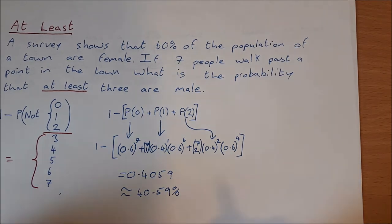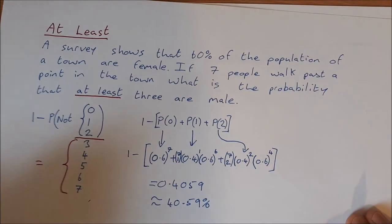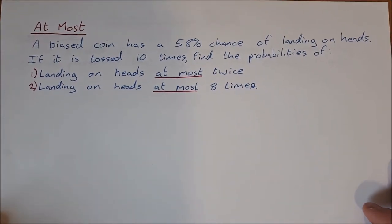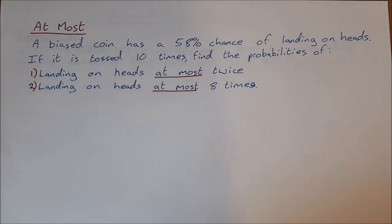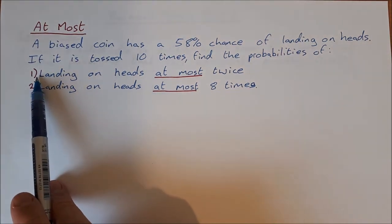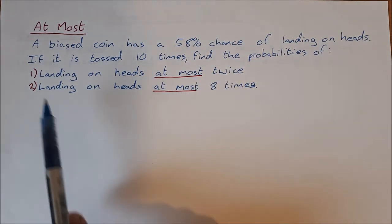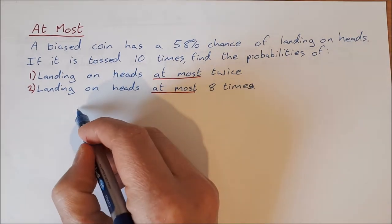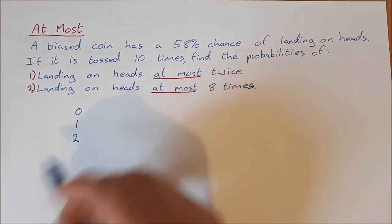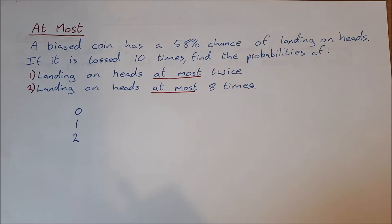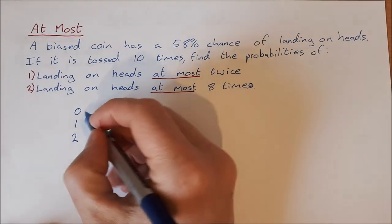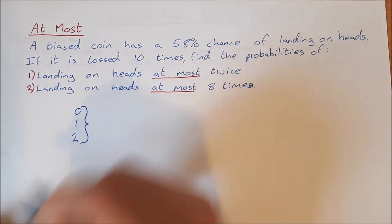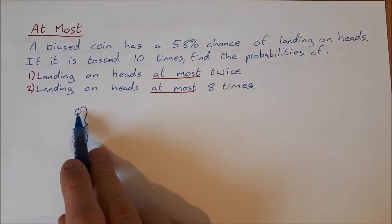Now let's look at an 'at most' question. A biased coin has a 58% chance of landing on heads. If it is tossed 10 times, find the probabilities of: (1) landing on heads at most twice, and (2) landing on heads at most eight times. For 'at most twice,' that means we can have 0, 1, or 2 heads — we can't have 3 through 10.